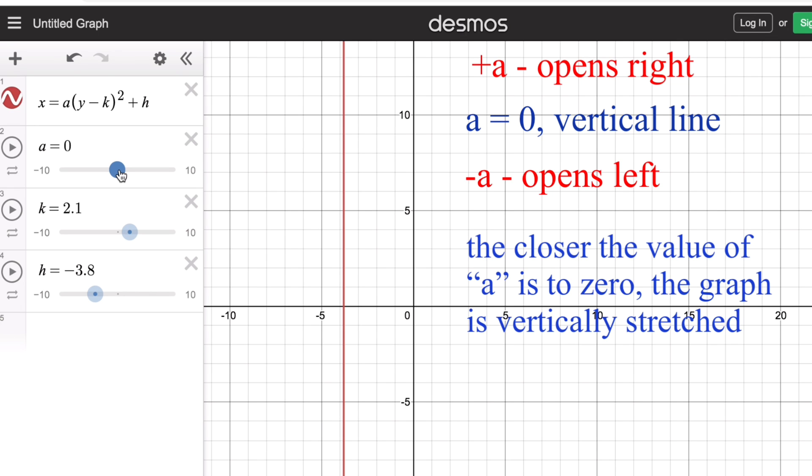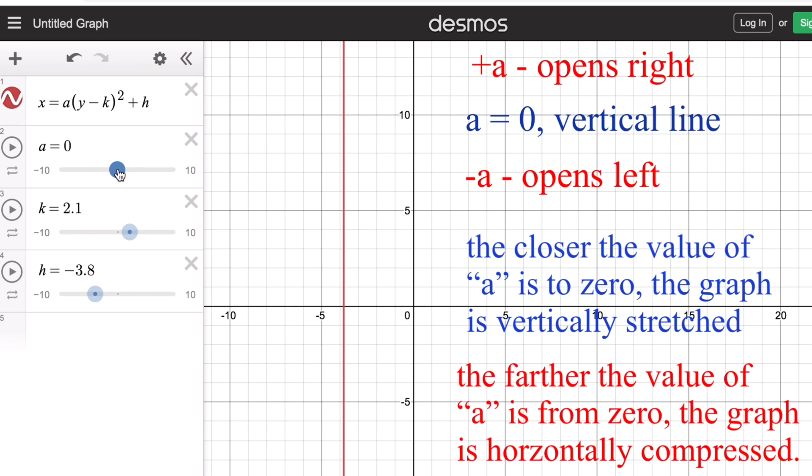On the contrary, if the value of a gets farther from zero—right now it's a vertical line—if we go farther from zero towards positive 10, the graph becomes horizontally compressed, meaning it becomes more and more horizontal in shape as we go farther from zero.